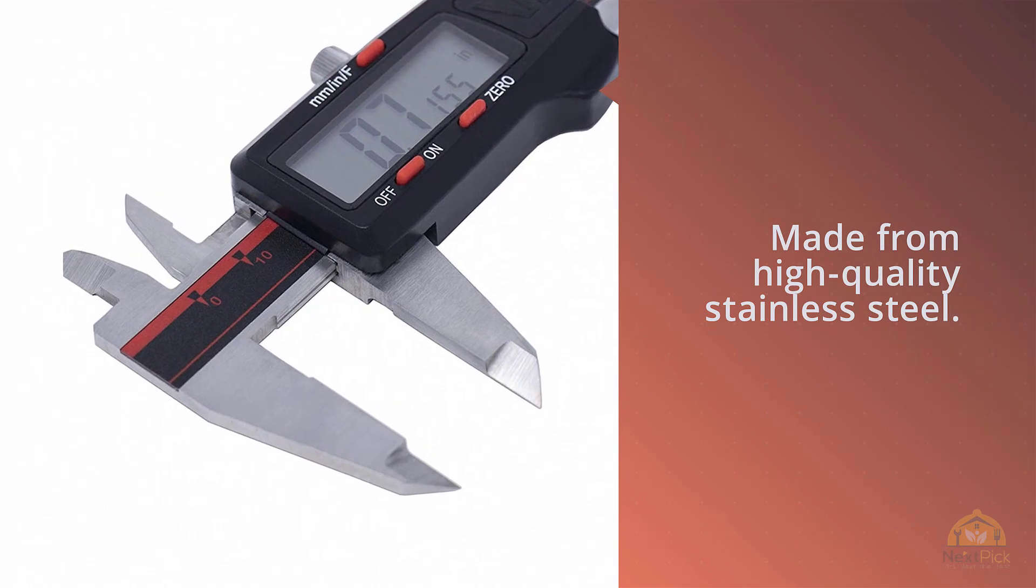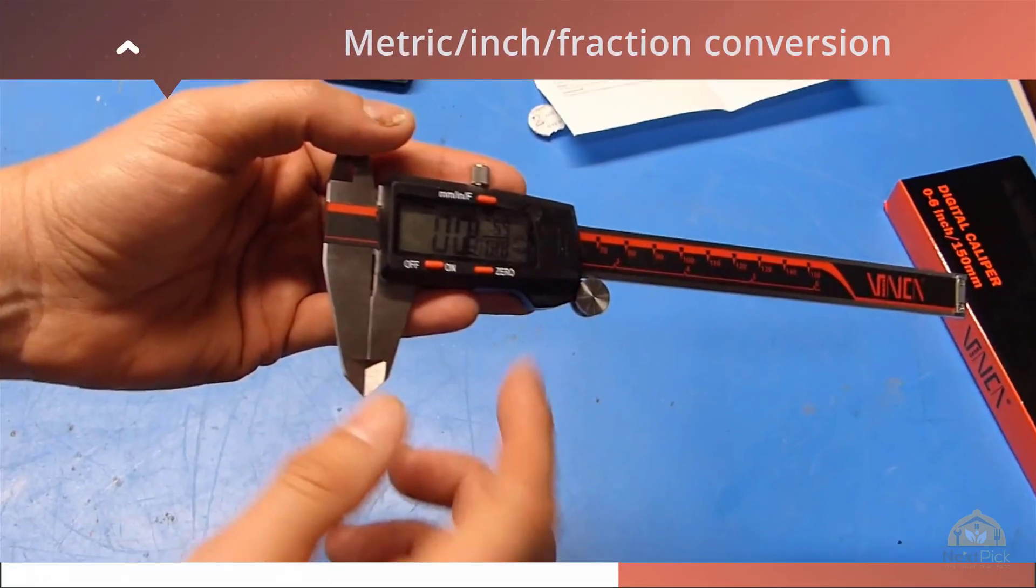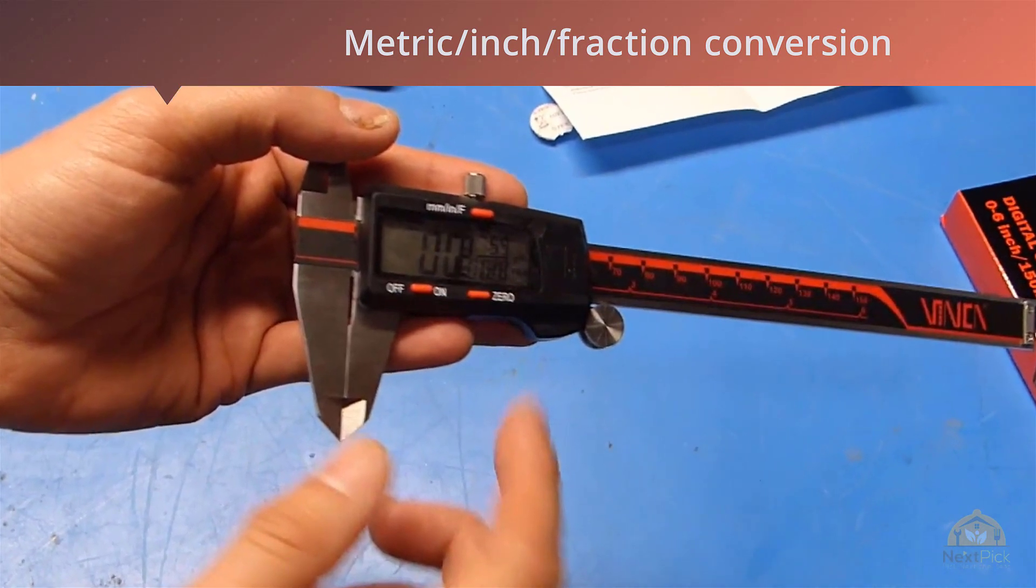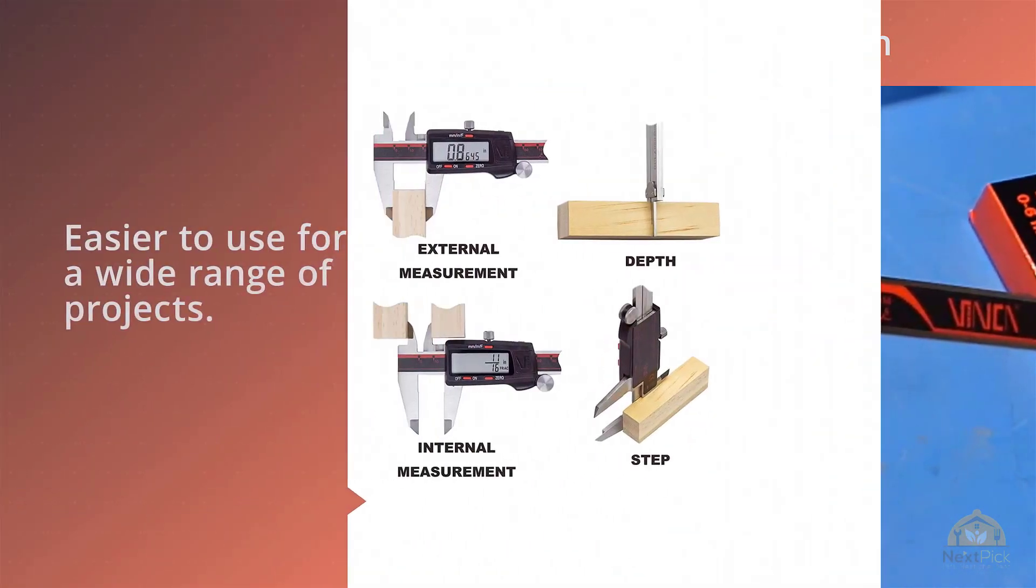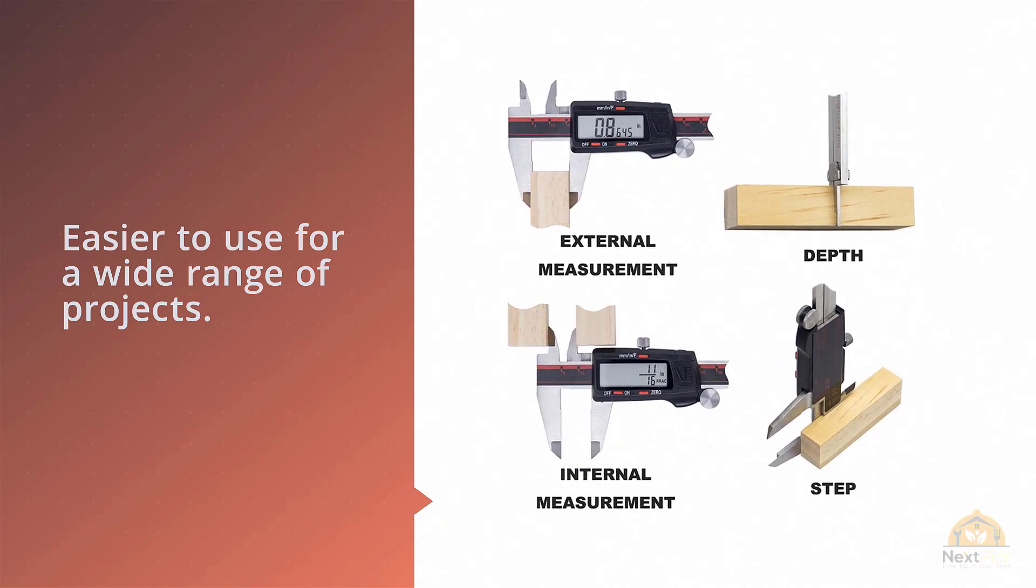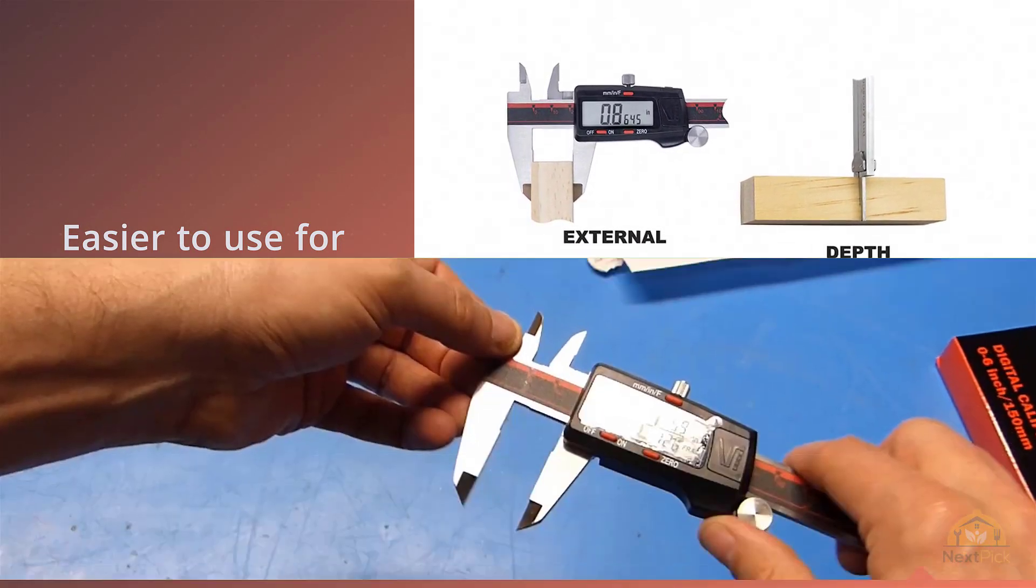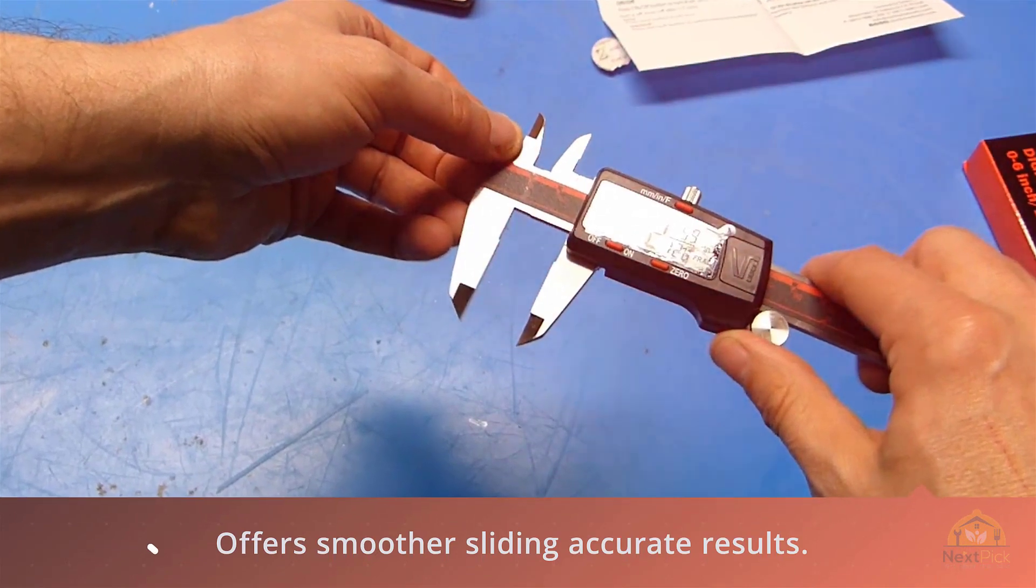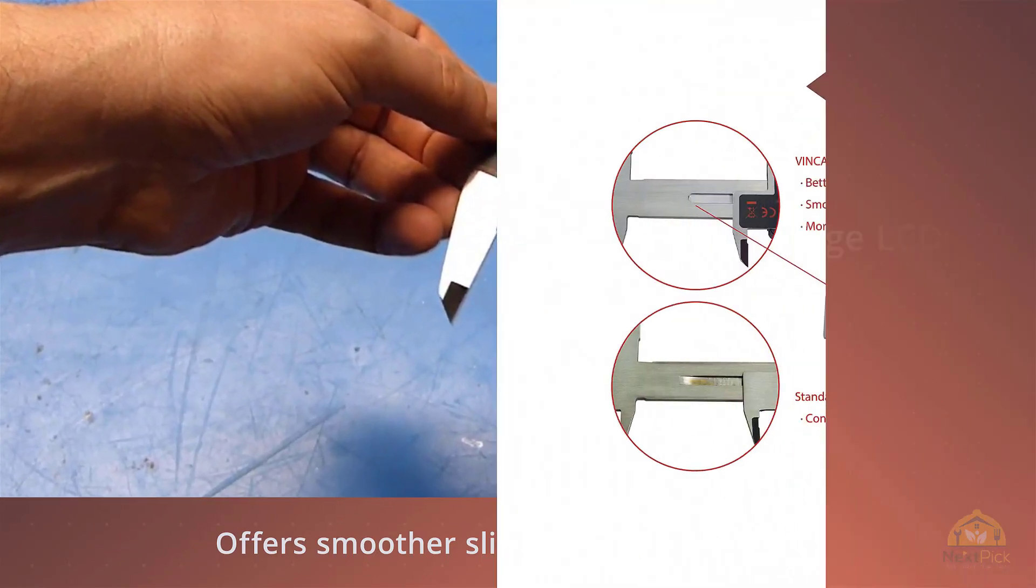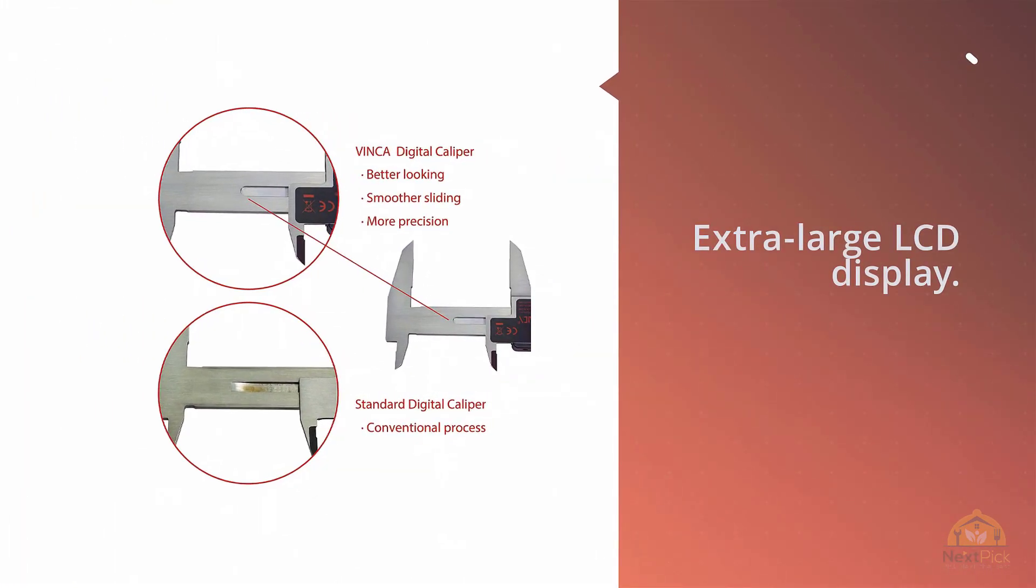The Vinca DCLA 0605 quality electronic digital vernier caliper contains a veneer scale alongside the main scale and is made from high quality stainless steel. It includes metric, inch, fraction conversion to make it easier to use for a wide range of projects. The fine polished finish offers smoother sliding and more accurate results. The caliper has a measuring range of 0 to 6 inches that includes an extra large LCD display.